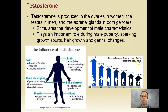Starting with testosterone, it is produced in the ovaries in women, the testes in men, and adrenal glands in both genders. It stimulates the development of what's typically associated as male characteristics. It plays an important role during male puberty, sparking growth spurts, hair growth, and genital changes. As the male ages, testosterone will decrease.